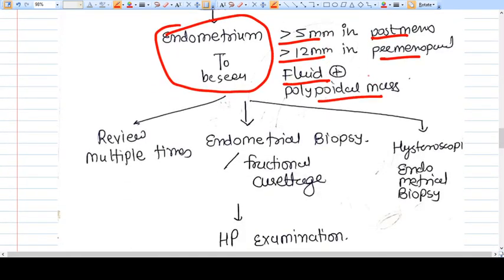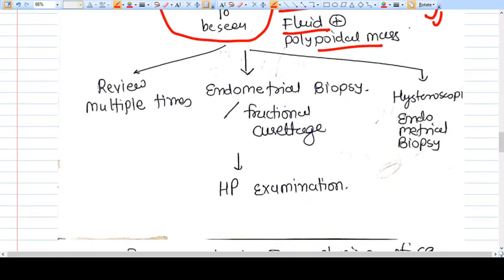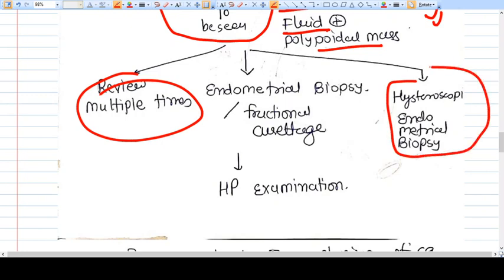Fluid is seen, polypoidal mass is also seen, then you should go for endometrial biopsy. Endometrial biopsy will clear your pathway of investigation. You can review it multiple times. You can see the atypical cells or carcinoma itself.